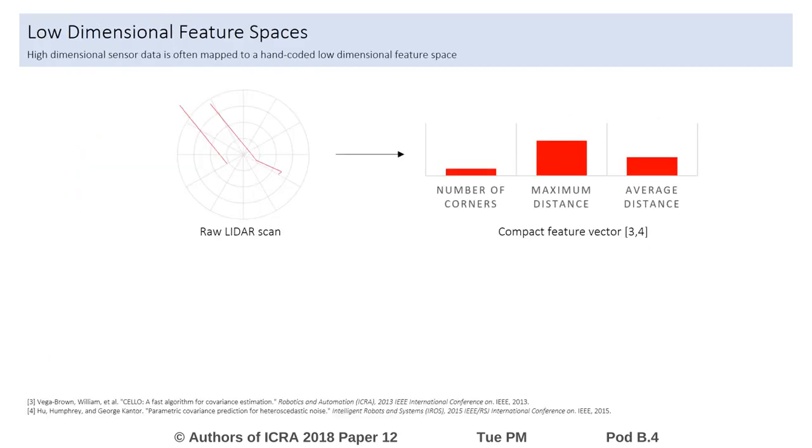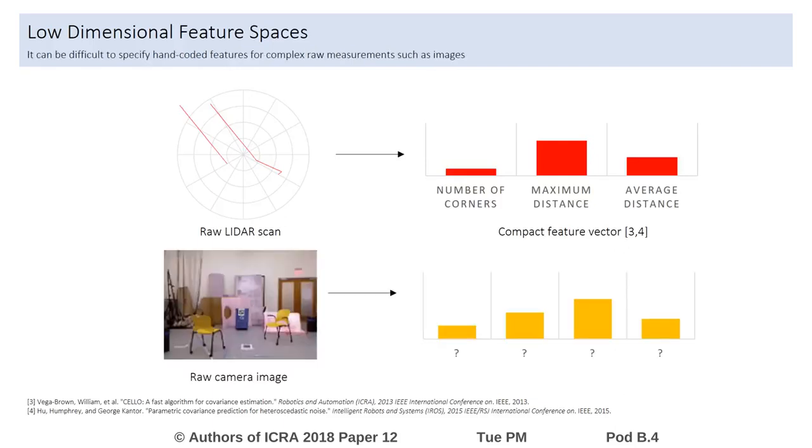Previous methods have assumed that high-dimensional sensor data can be mapped to a low-dimensional feature space. For example, a feature for a 2D LIDAR scan might be the number of corners. In practice, such low-dimensional feature spaces are hand-specified by experts and can be difficult to specify for complex, raw measurements such as images.